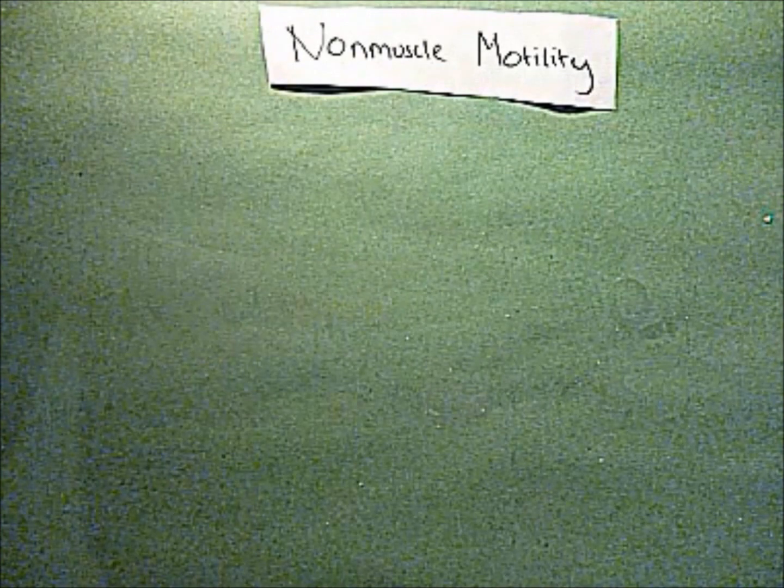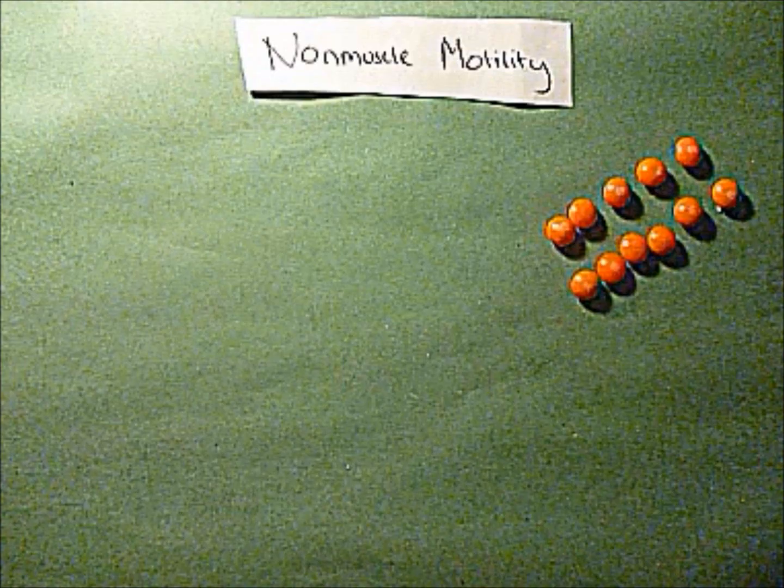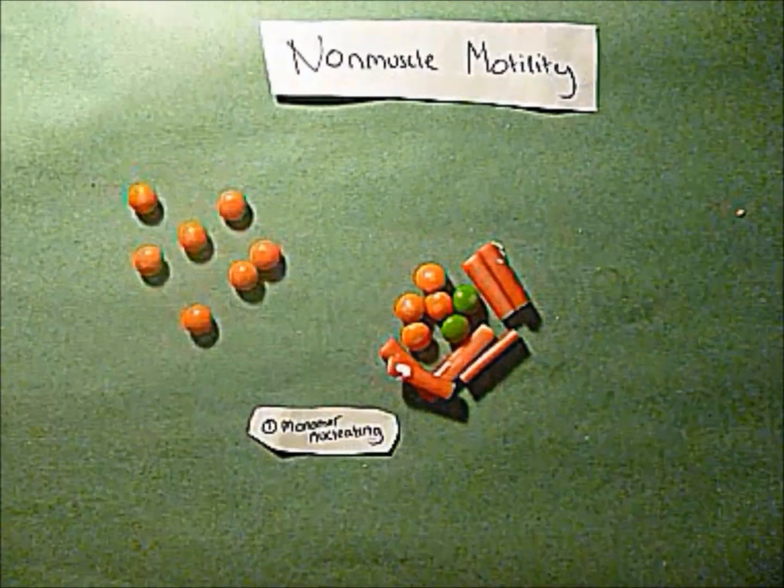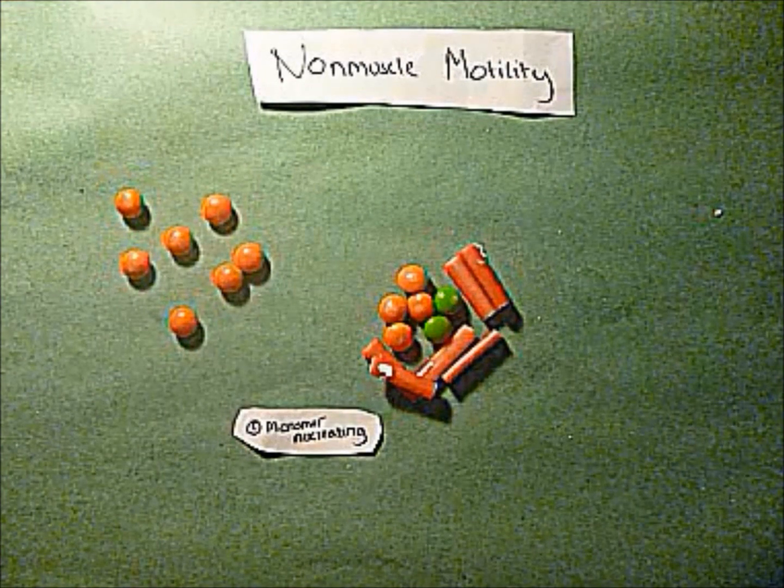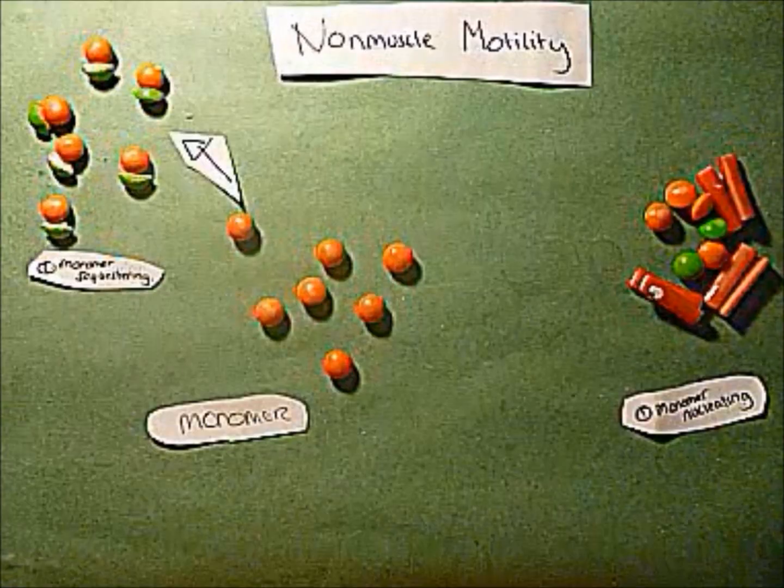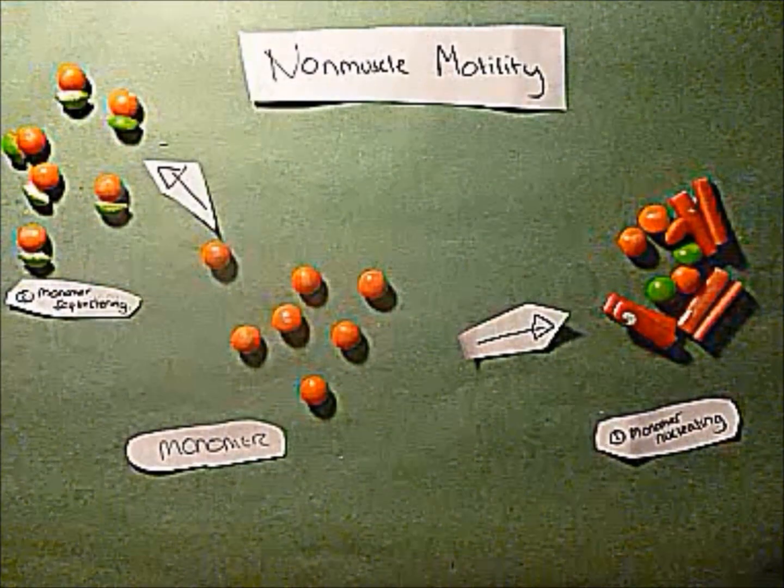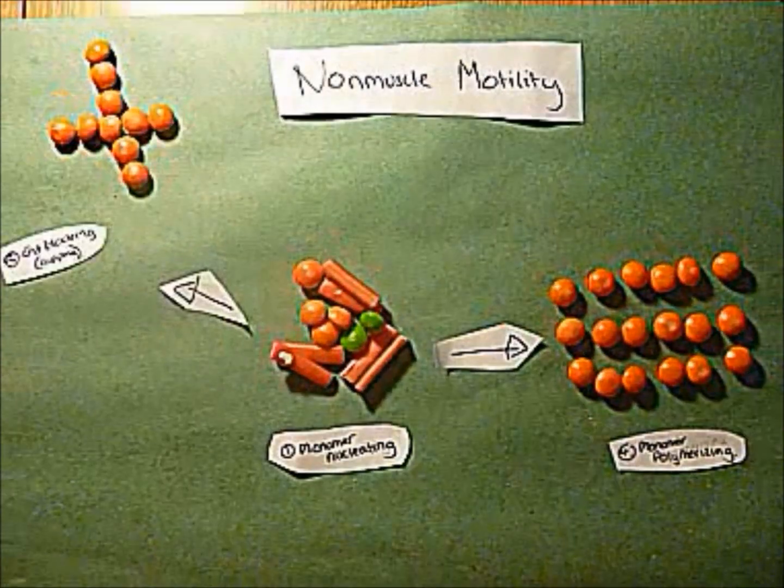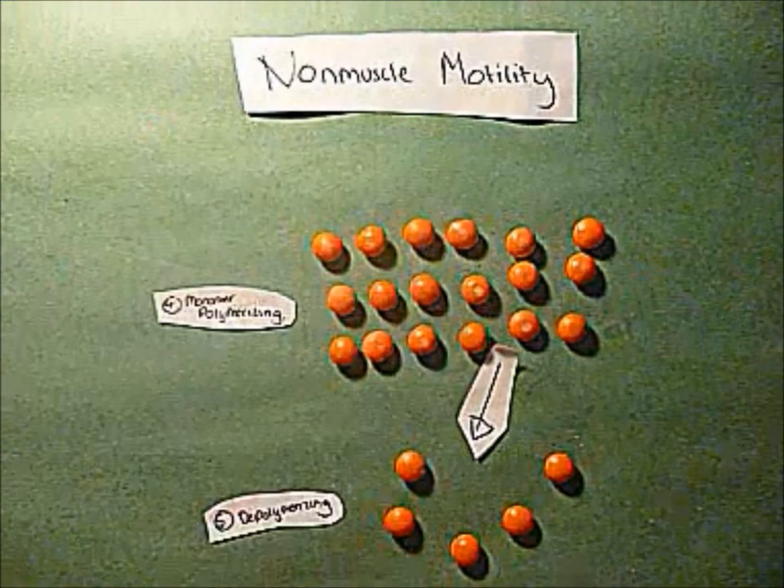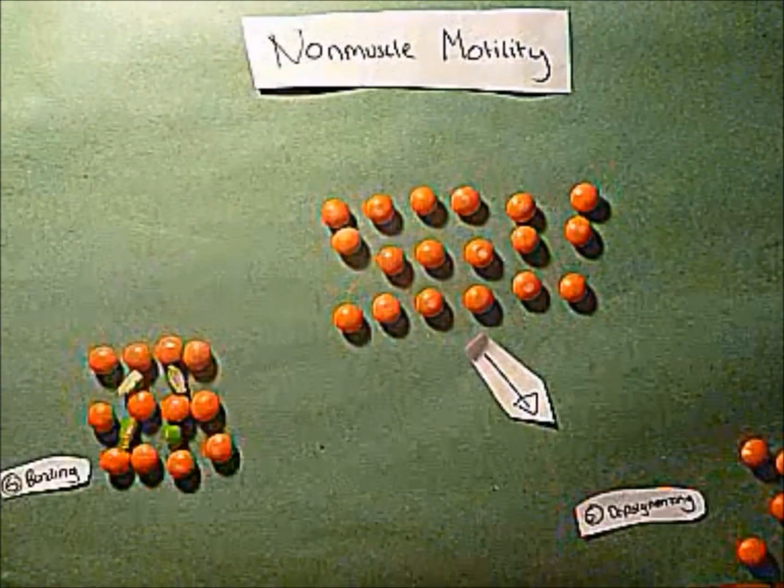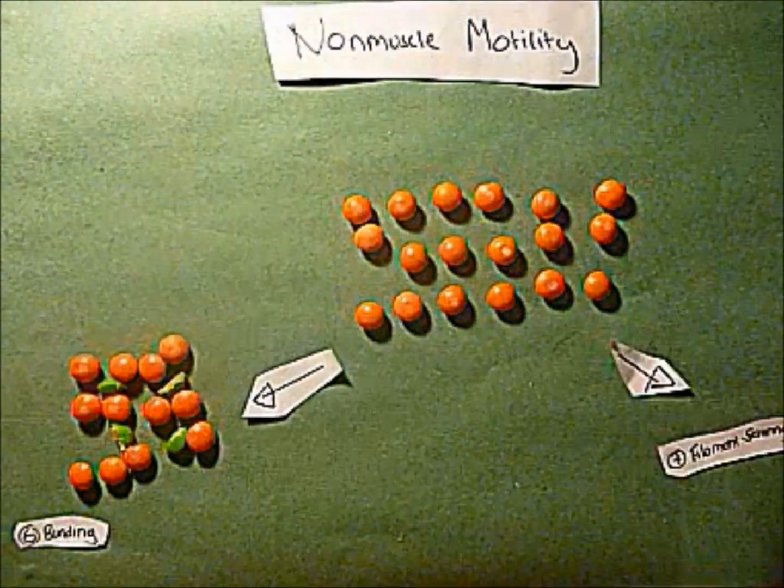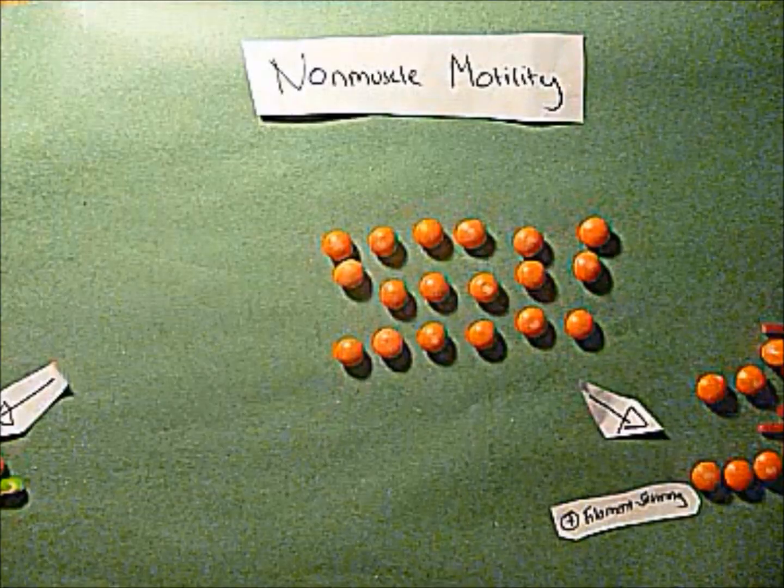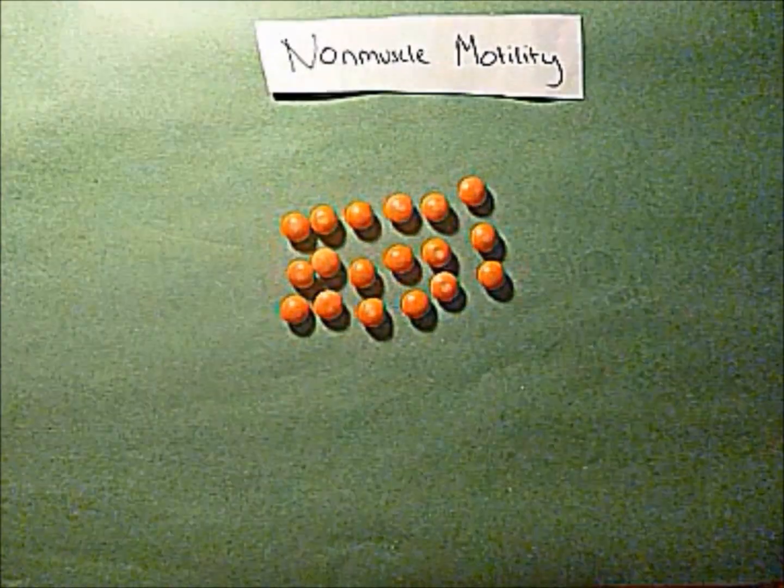Non-muscle motility. Actin binding proteins. The organization and behavior of actin filaments are determined by actin binding proteins that affect the assembly and disassembly of filaments. Actin binding proteins can be divided into several categories based on their presumed function in the cell, starting from nucleation of the monomers to the formation of crosslinks and eventually the adhesion of the membrane.